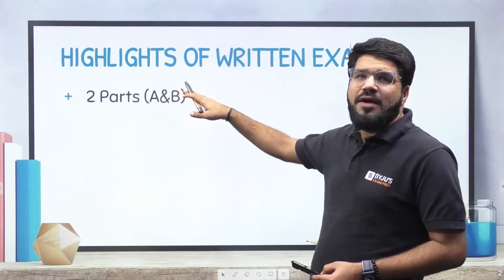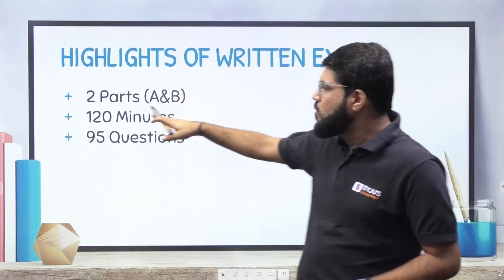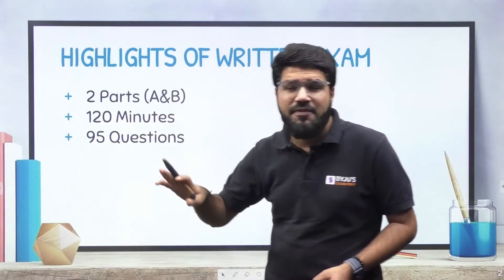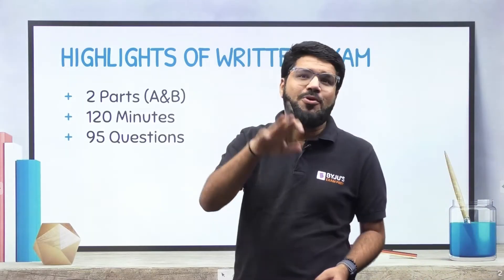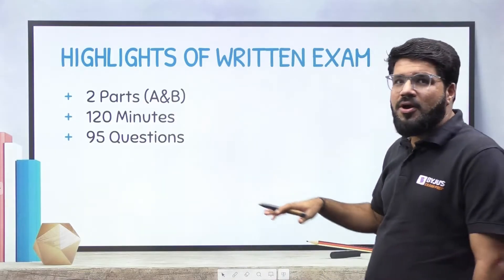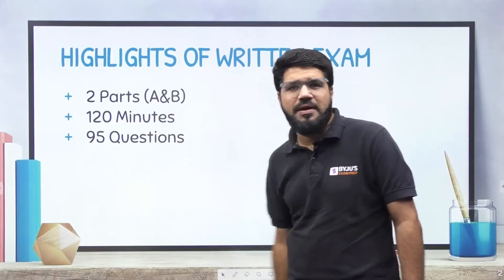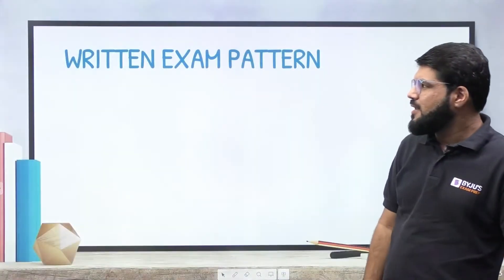We all know that it is going to have two parts A and B, where A will be the technical, B will be the general aptitude. Total duration 120 minutes for the 95 questions. Again, whether you worry about aptitude or the core topics or the allied topics, the questions are going to be on a simpler level because the time per question is very small.